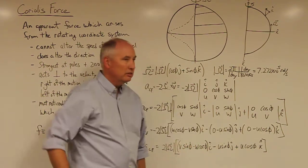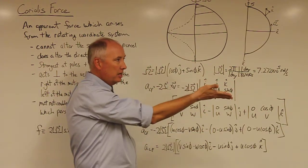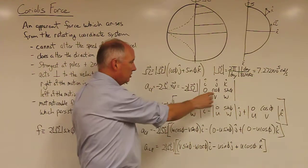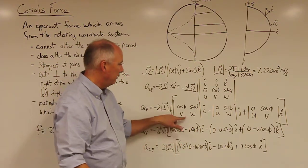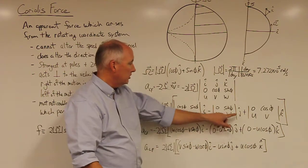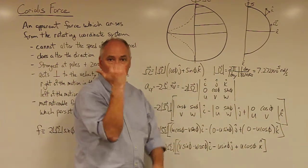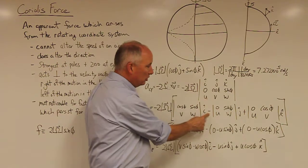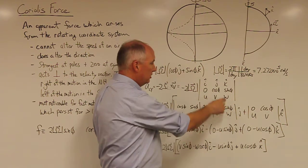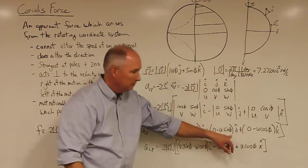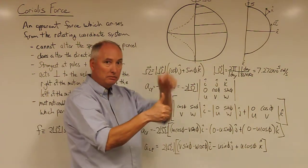So, in order to get the i component of this cross product, you need to actually cross product the j and k. So you take the j, roll it into the k, and get the positive i. And so you're essentially doing a cross product here of w times cosine and minus v times sine in the i-hat direction. To get the j-hat vector, we need to cross the i and the k columns. So i cross k will give you minus j. That's why we have the minus term here. And so it would be zero times w minus u times sine of φ. And that's our j-hat. And in order to get our k-hat, we have to cross the i and j. So i cross j gives me positive k.